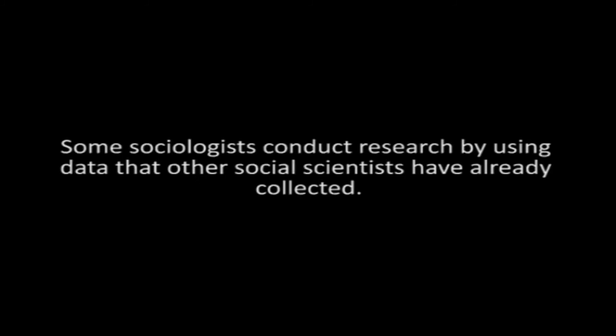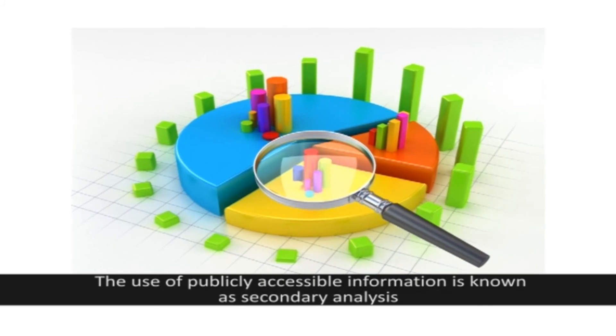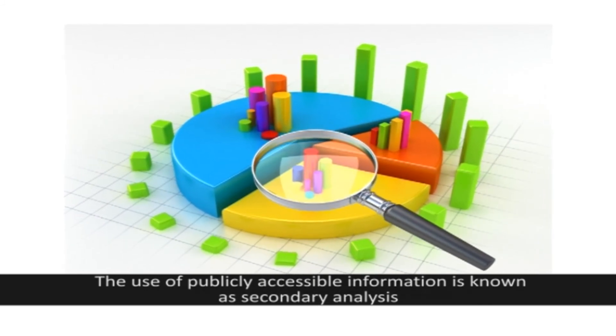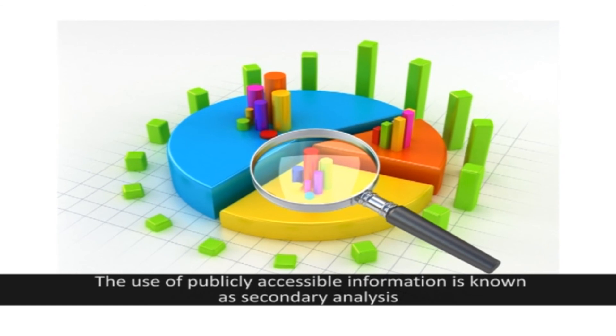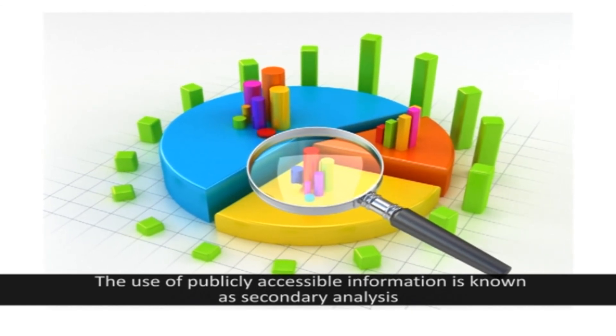Research with Existing Data or Secondary Analysis: Some sociologists conduct research by using data that other social scientists have already collected. The use of publicly accessible information is known as secondary analysis and is most common in situations in which collecting new data is impractical or unnecessary.